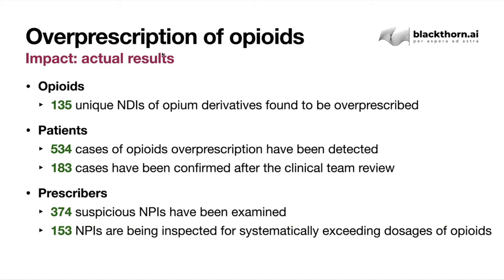We identified 135 — remember it was 12,000 opioid derivatives at the beginning — but only 135 of them were detected to be overprescribed. We also detected more than 500 patients who actually overdosed or underdosed. After review with the clinical team, we identified 183 cases confirmed to be anomalous. As for prescribers, out of 600 prescribers, there were 374 suspicious NPIs examined, with above 100 put to further review.